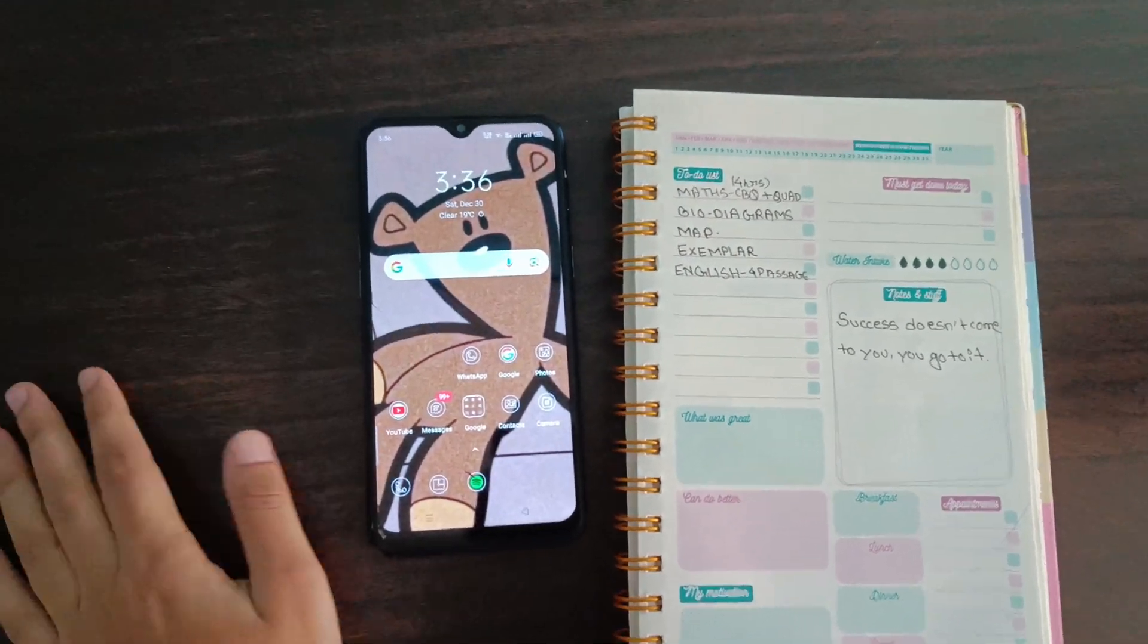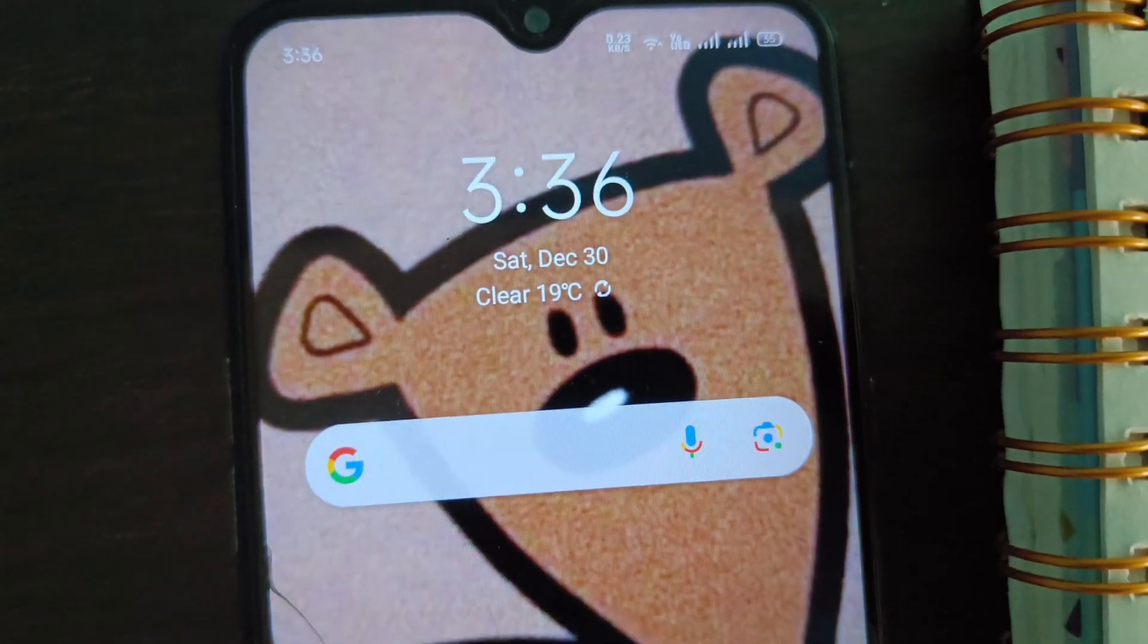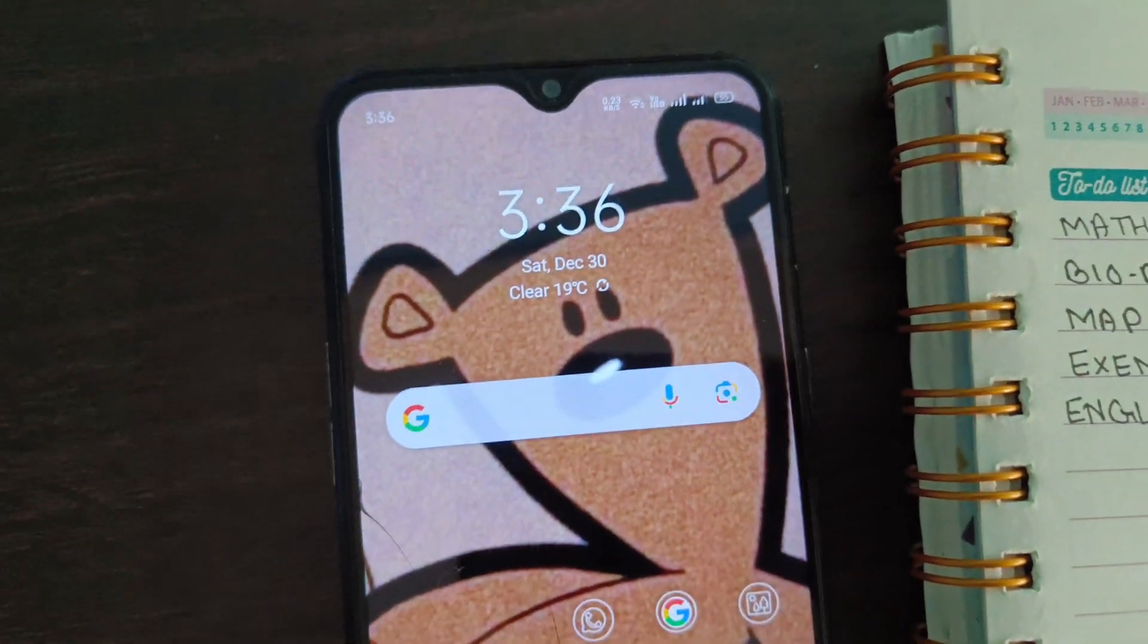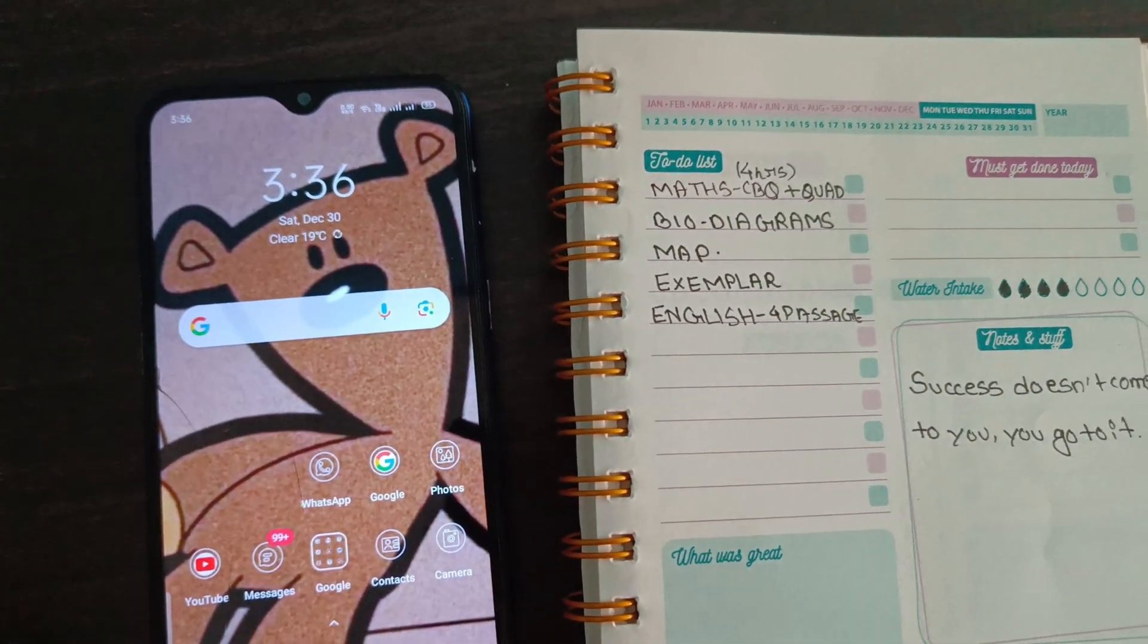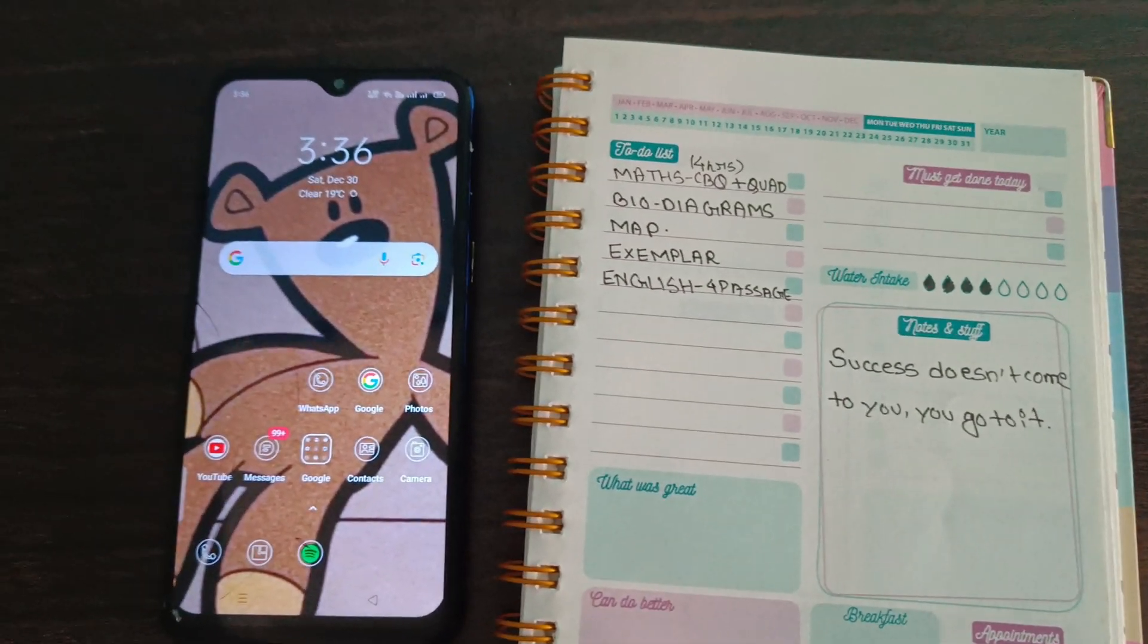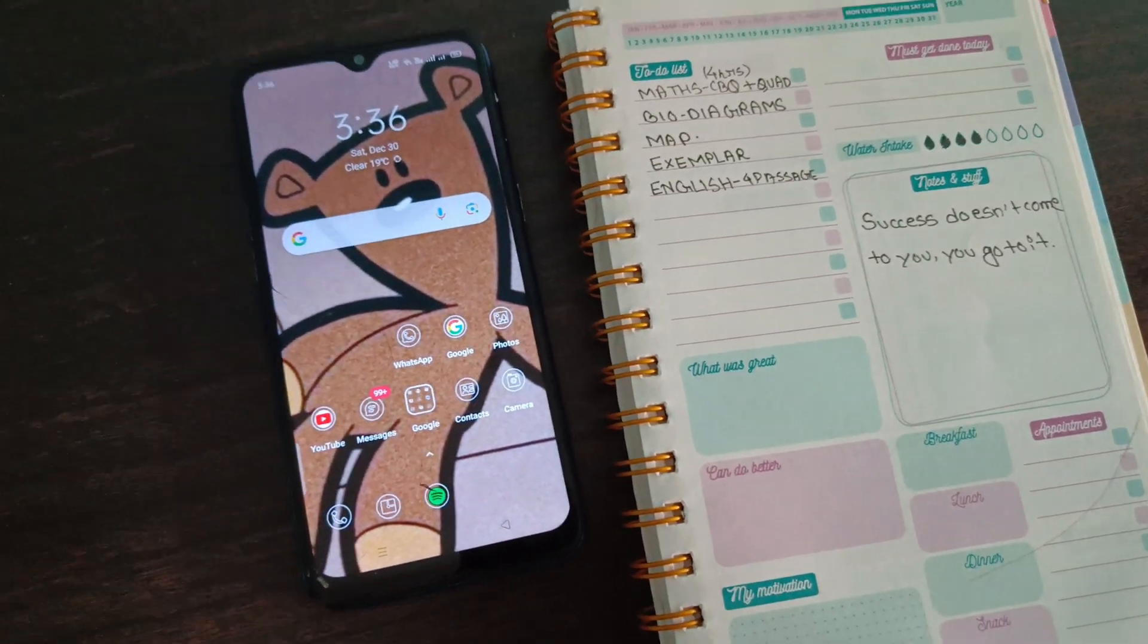Hi everyone, today is 30th December Saturday and it's currently 3:36 PM. This is my to-do list for today. We basically have a lot to do today, especially from the subject mathematics.